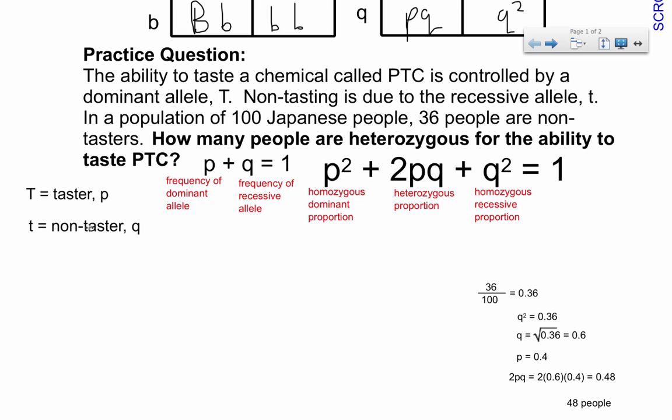36 people are non-tasters. So I have to understand, what does non-taster mean? A non-taster has to be somebody who is little t, little t, right? If they're big T, little t, they'll be tasters. So in this case, they're telling me 36 people are non-tasters. So 36 out of 100 people, or 0.36 people are non-tasters. Because I've figured out that non-tasting individuals have to have the genotype little t, little t, that's actually represented by Q squared. So I can conclude that 0.36 is actually what Q squared represents.